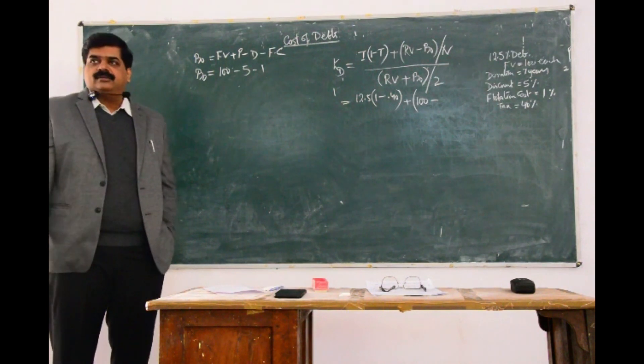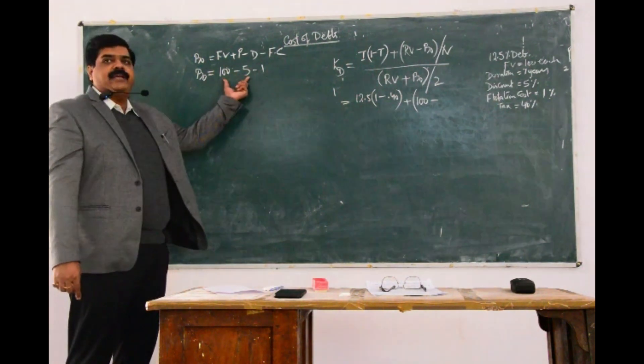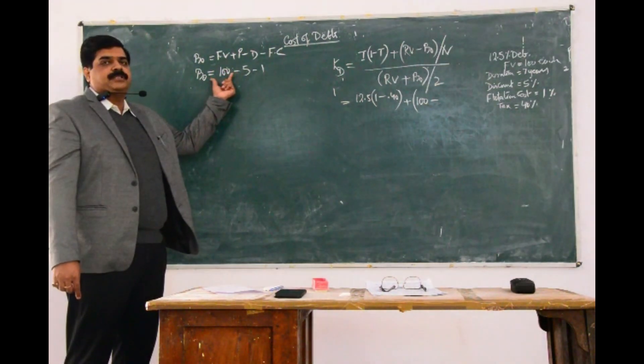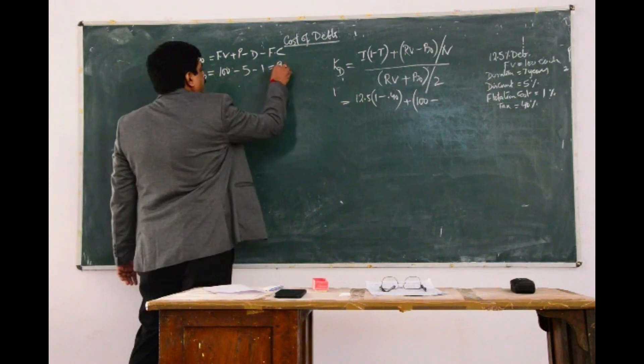I told you earlier also, that flotation charges will be on the face value or issue value, whichever is higher. The issue value is 95, face value is 100. 100 is more, so 1% of 100, so that makes Rs 94.